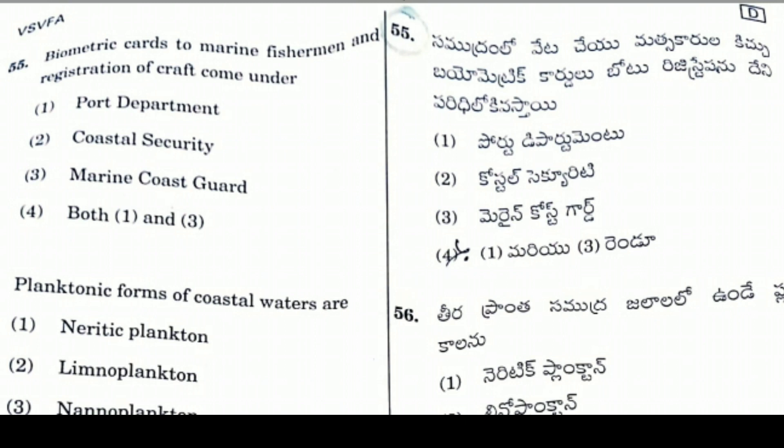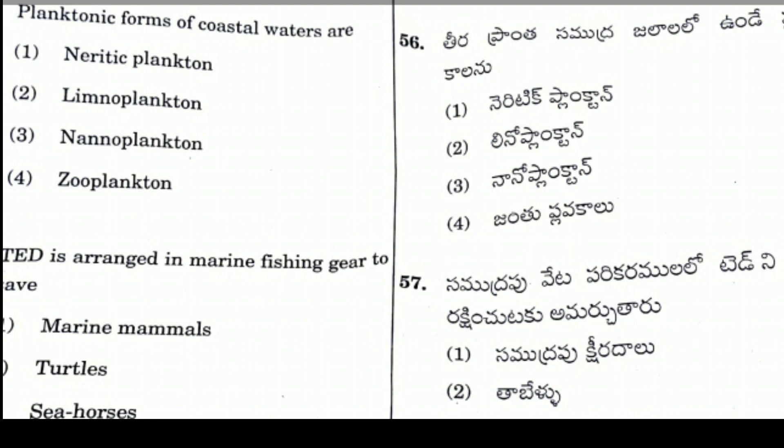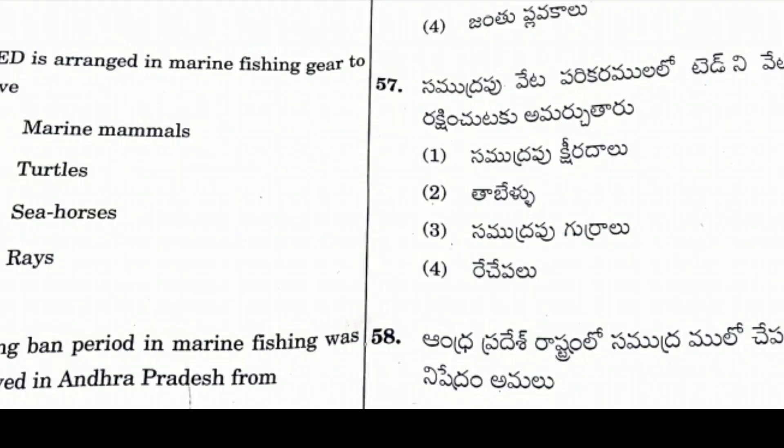Question 56: Planktonic forms of coastal waters are called — the answer is Option 1, Neritic Plankton. Question 57: TED is arranged in marine fishing trawl nets to protect turtles during fishing.